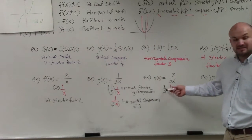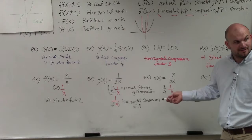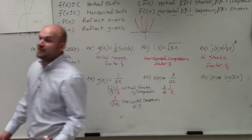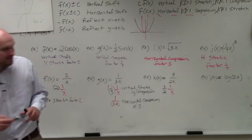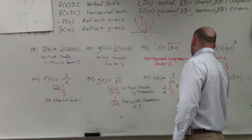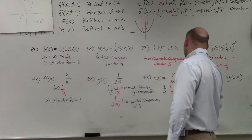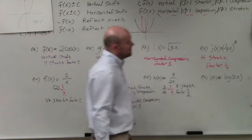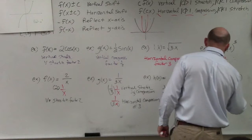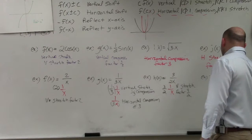Over here, you're multiplying by three halves. A lot of students say, 'oh, it's a fraction' — but is that fraction less than 1 or greater than 1? Greater than 1. So therefore it's a vertical stretch, factor of three halves. And then over here, you're multiplying by 2 inside the function. The absolute value is greater than 1, so it's a horizontal compression, factor of 2.